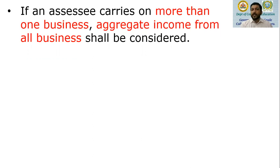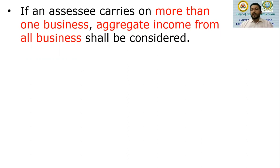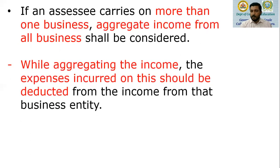If an assessee carries on more than one business — suppose a steel business, a cement business, and a sand business — then the aggregate income from all businesses shall be considered. The income from all these multiple businesses is added together.